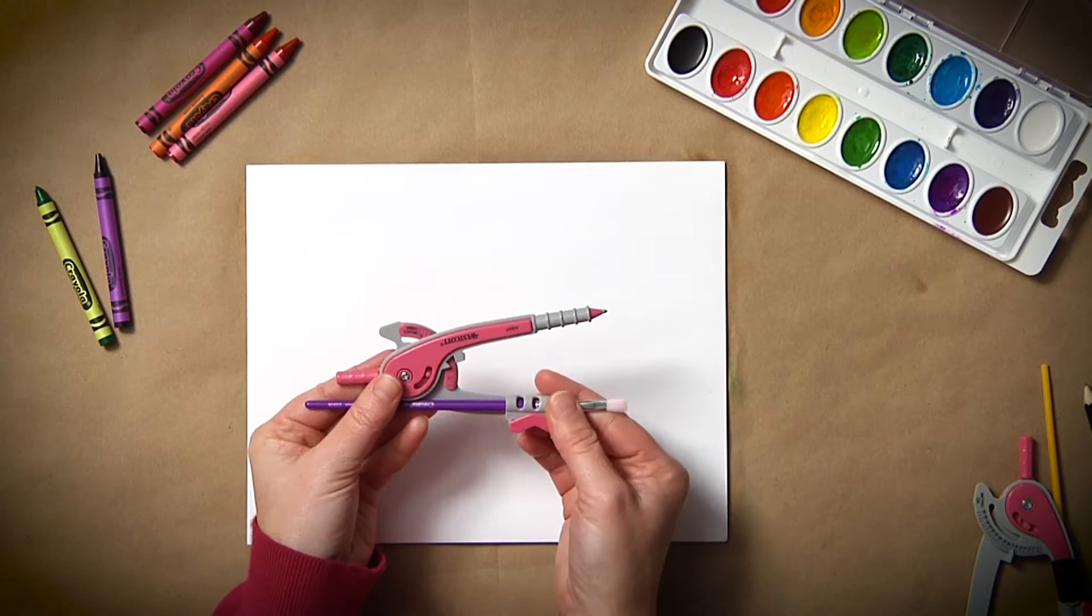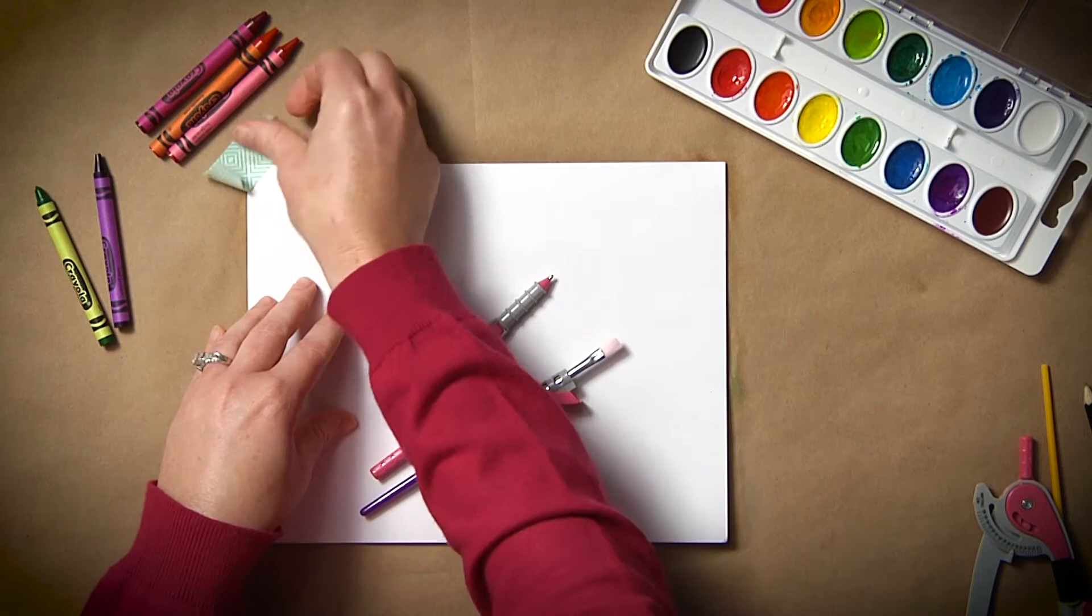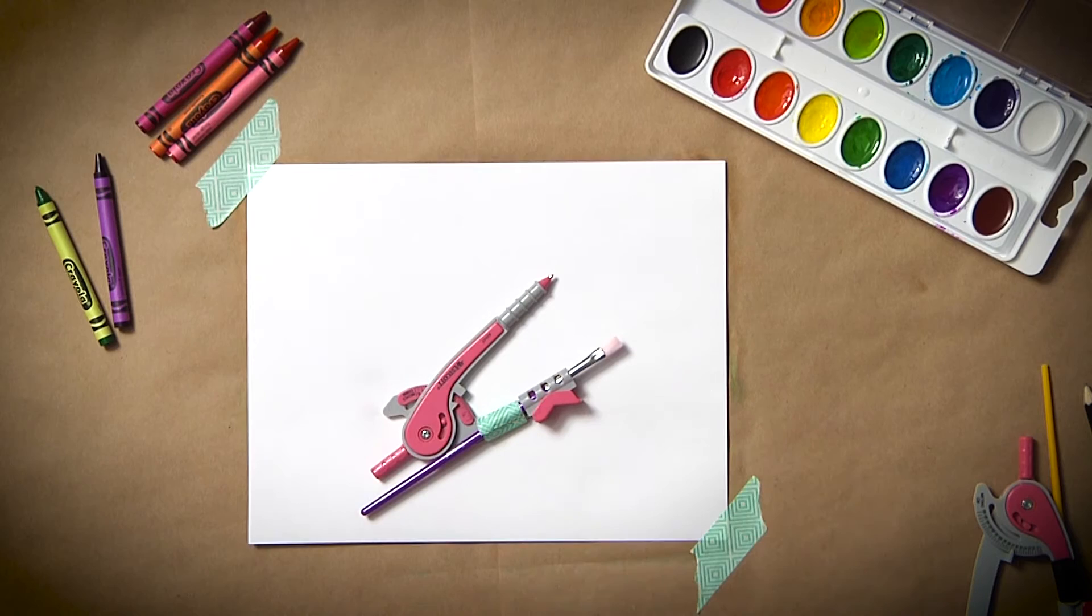Students will replace the pencil in the compass with a paintbrush. Depending on the design of your compass, you may need to use tape to hold it in place. You may also want to tape the edges of the paper down so it doesn't move.